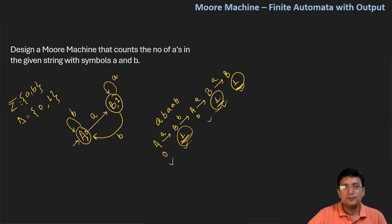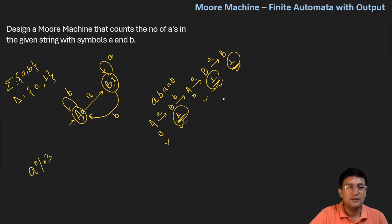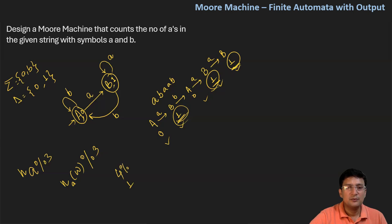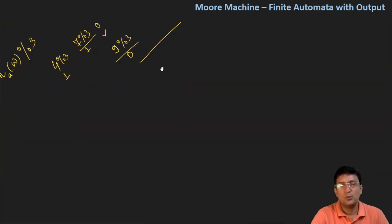Let us design something else with respect to what we have just designed. We are changing the question — it will count the number of A's mod three. So if I get four A's, it will print one because four modulus three is one. If I get seven A's, it will produce one. If I get nine A's, the output is zero because nine modulus three is zero. If I get 12 A's, output is zero. If I get 14 A's, the output will be two.